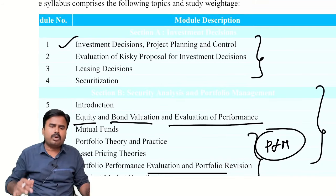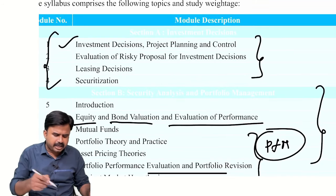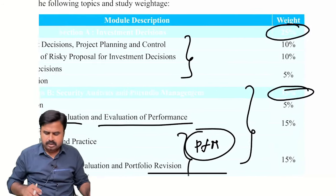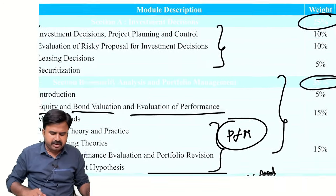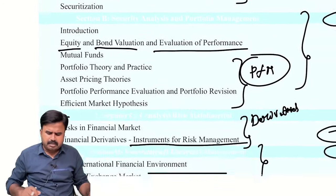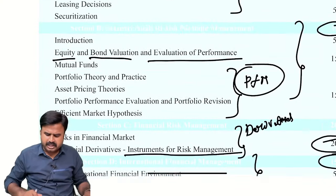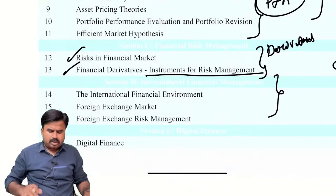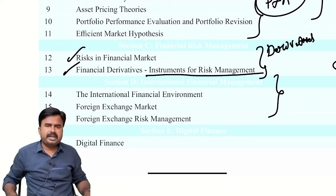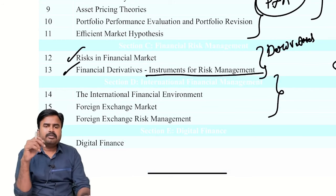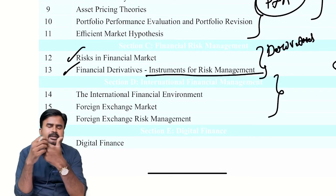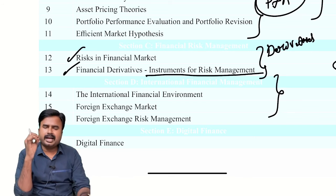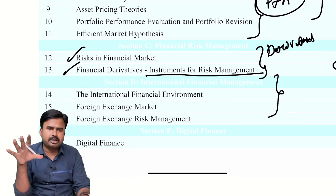They are strictly following the weightage percentages with little deviation of about 1% or 2%. In one examination they deviated a lot — they gave around 40 marks to investment decisions instead of the expected 25. But that doesn't matter; in recent examinations they are strictly following these weights. Predominantly in this subject, we need to deal with stock market, currency market, and money market. If you can understand these markets, you can definitely handle these chapters.